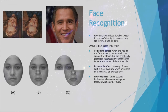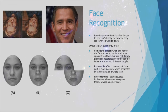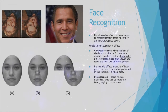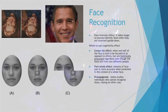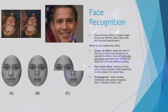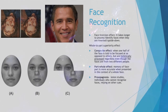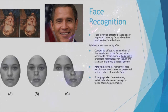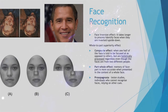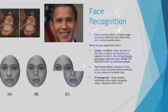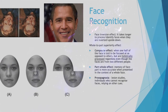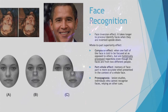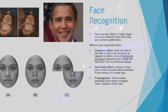There is also the part-whole effect, where memory of a face part is more accurate when presented in the context of a whole face. Trying to remember individuals' faces by individual features like noses, eyes, and mouths is not as effective as remembering all of these features combined in the context of a face.